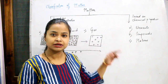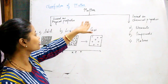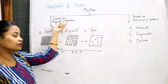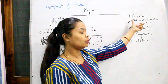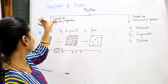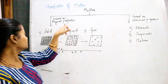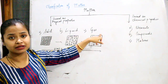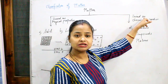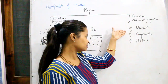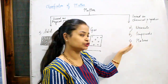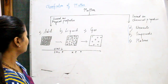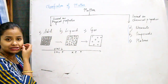Our next topic is classification of matter. The modern-day classification of matter is based on either physical properties or chemical properties. On the basis of physical properties, matter is classified into three: solids, liquids, and gases. On the basis of chemical properties, matter is classified into elements, compounds, and mixtures, which we will study in higher classes. In this chapter, we will see solids, liquids, and gases in detail.